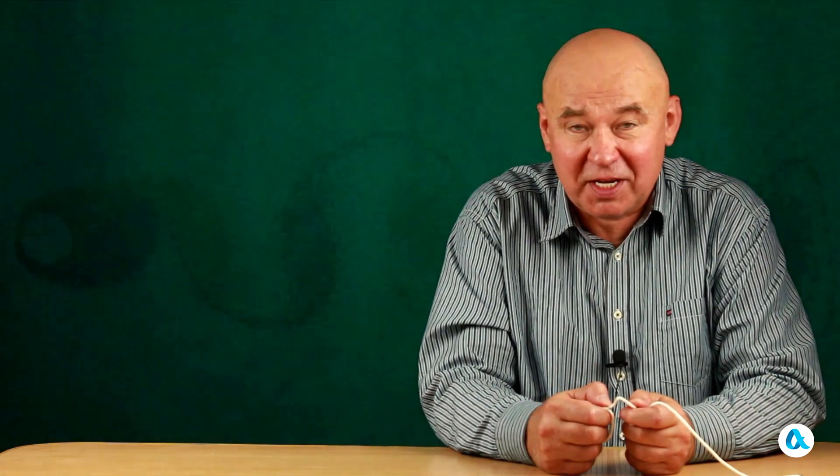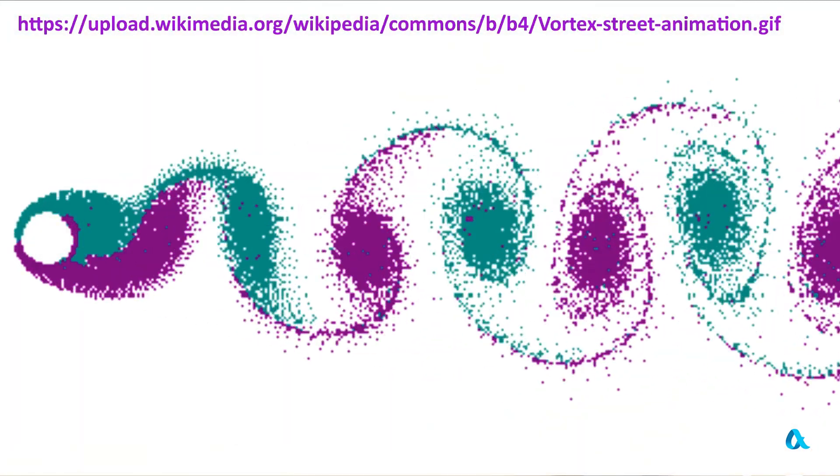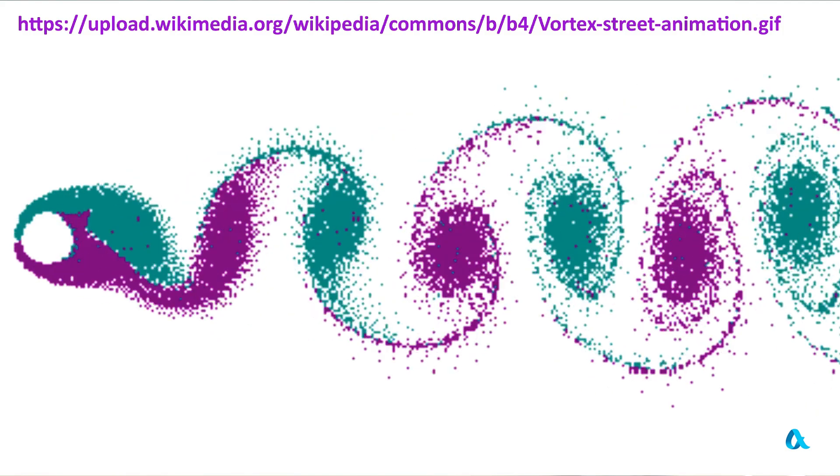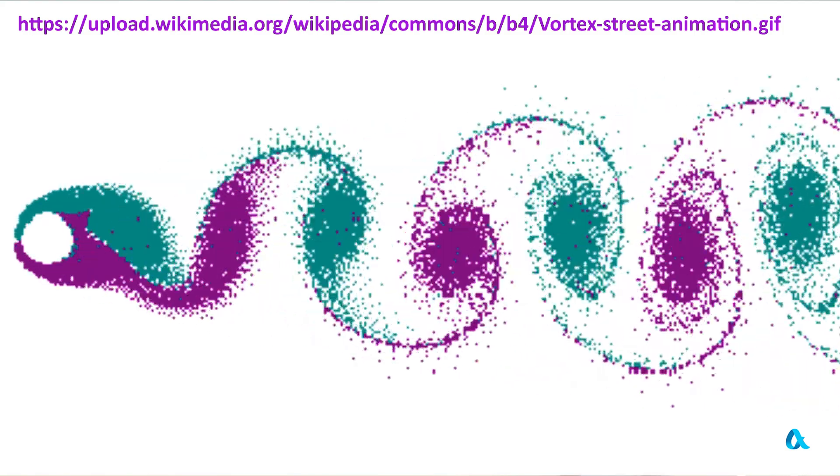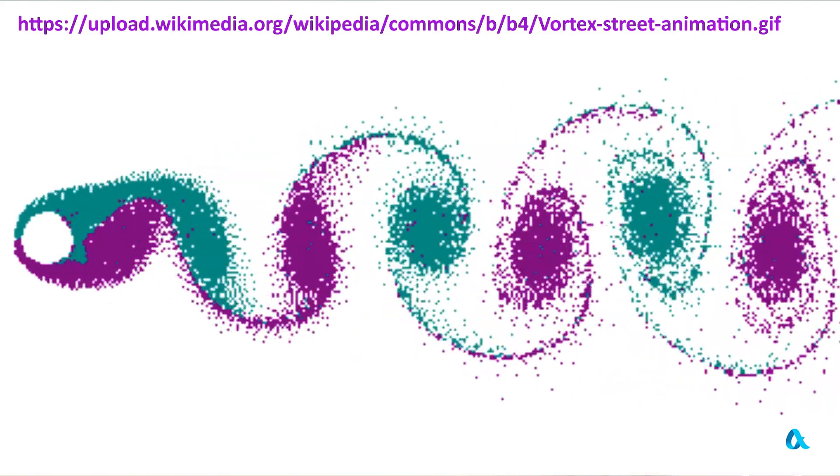He was also studying vortex streets, which are repeating patterns of swirling vortices that form behind obstacles when they are flowed around by air or liquid.